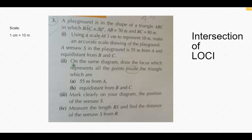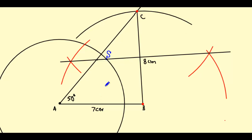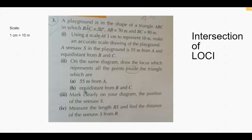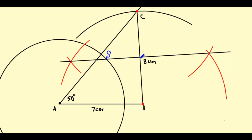In the second part, on the same diagram, draw the locus representing all points inside the triangle that are 55 meters from A — that is 5.5 centimeters from A — which is the circle we have already drawn. The second locus is equidistant from B and C inside the triangle, which is the perpendicular bisector, and the relevant portion of the bisector that lies inside the triangle.